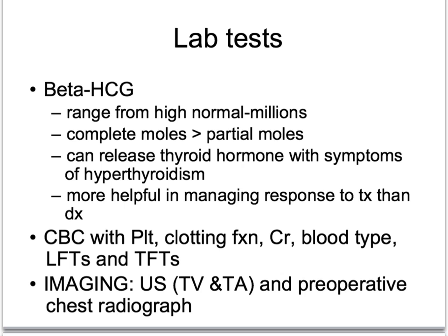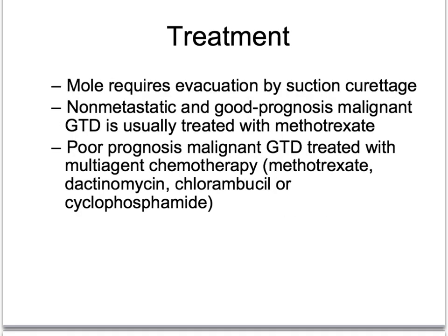A mole is going to require evacuation by suction curettage as well as chemotherapeutic treatment. For non-metastatic and good prognosis malignant gestational trophoblastic disease, methotrexate is the agent of choice with weekly doses of 30 to 50 milligrams per meter squared as an intramuscular injection. It has been found to be the most cost-effective treatment when taking efficacy, toxicity, and cost into consideration. Triple therapy is more often needed in women with poor prognosis malignant GTD, and will often include methotrexate paired with a combination of dactinomycin, chlorambucil, or cyclophosphamide.